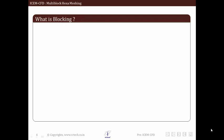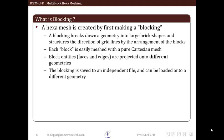A hexagonal mesh is created by first making a blocking. A blocking breaks down a geometry into large brick shapes and structures. Each block is easily meshed with a pure cartesian mesh. The block entities such as vertex, edge and face are projected onto different geometries. This blocking is saved to an independent file named .blk and can be loaded onto a different geometry at any point of time.